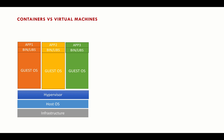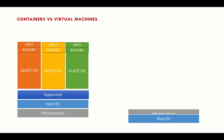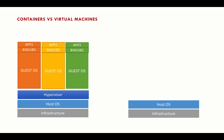That's how a virtual machine works — it virtualizes the infrastructure layer. Now let's look at Docker containers. Again we start with the infrastructure layer, consider it as your laptop or server. On top of the infrastructure we have the host operating system — similar so far, say Mac OS. Now comes the Docker daemon, and here is the key difference.